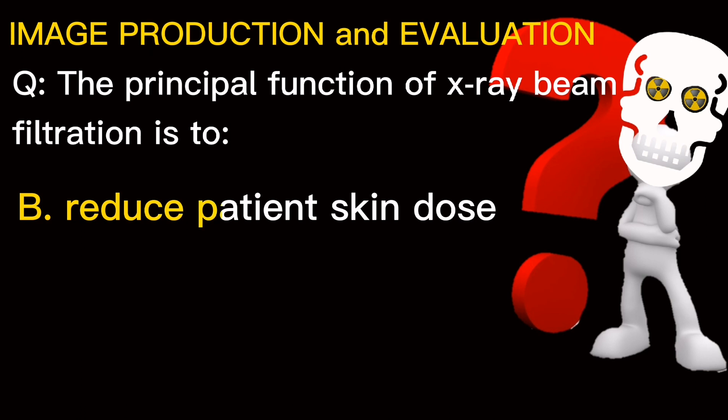Reduce patient skin dose. It is our ethical responsibility to minimize radiation dose to our patients. X-rays produced at the target comprise a heterogeneous primary beam. There are many soft or low energy photons that, if not removed, would contribute to greater patient dose. They are too weak to penetrate the patient and expose the image receptor — they just penetrate a small thickness of tissue and are absorbed.